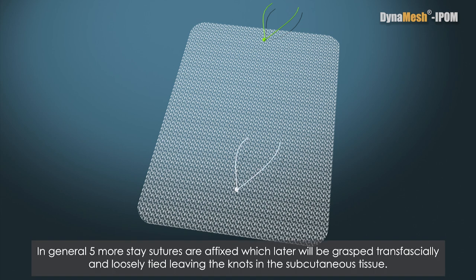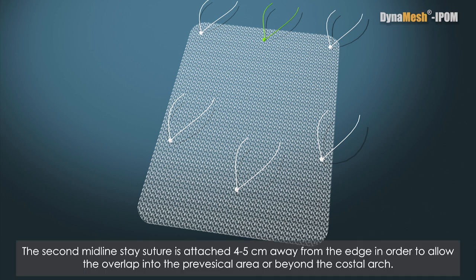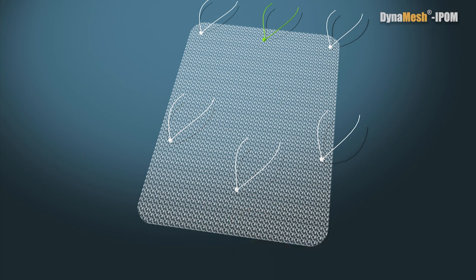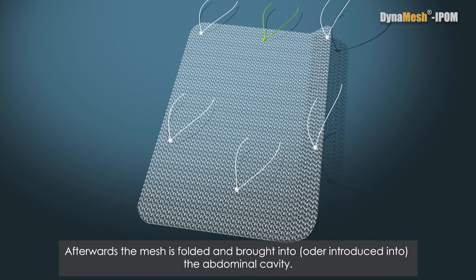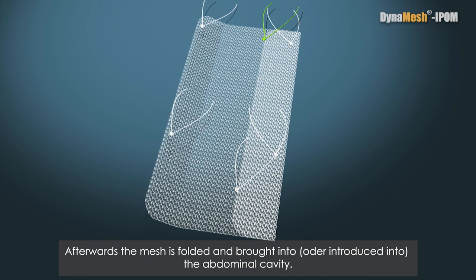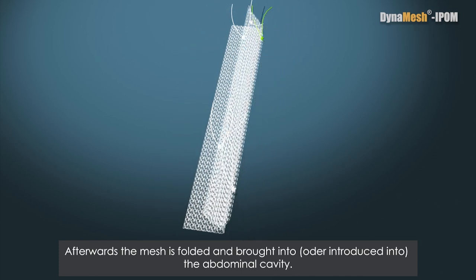In general, five more stay sutures are affixed, which later will be grasped transfascially and loosely tied, leaving the knots in the subcutaneous tissue. The second midline stay suture is attached 4-5 cm away from the edge in order to allow the overlap into the pre-vesicle area or beyond the costal arch. Afterwards, the mesh is folded and introduced into the abdominal cavity.